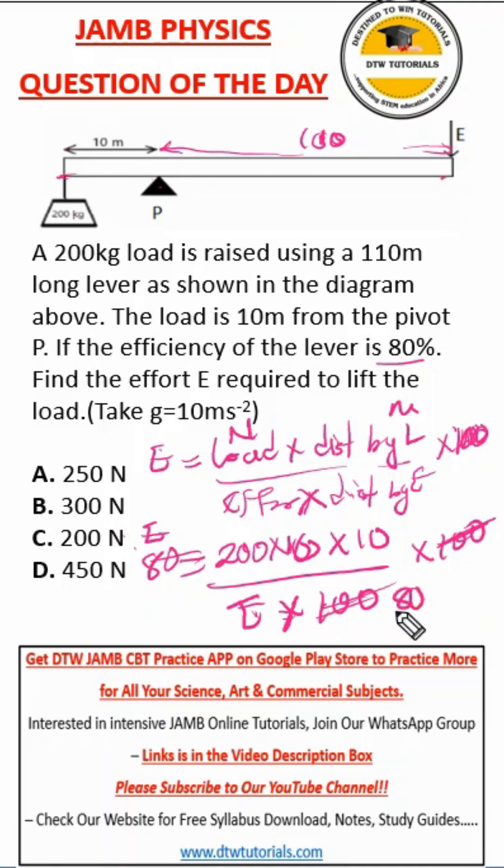That's change of subject formula. Cancel out, cancel out. Two goes here four times, two goes here five times. Four here, four goes here one time, and four in 200 goes 50 times. We're left with 50 times 5, and that will give us 250 newton. So E is equal to 250 newton, and that is answer A.